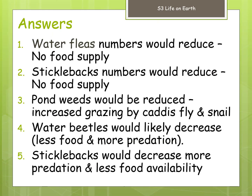In summary: water flea numbers would reduce — no food supply. Stickleback numbers would reduce — no food supply. Pondweed would reduce because of increased grazing by caddis fly and snail. Water beetles would likely decrease because there's less food and more predation. And sticklebacks would decrease because of more predation and less food availability.